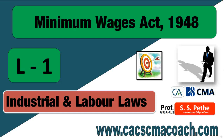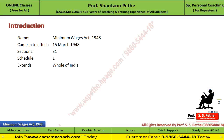We are going to start the topic: Minimum Wages Act 1948. First, we will see the introduction part. The name of this act is Minimum Wages Act 1948, and it came into effect on 15th of March 1948. There are total 31 sections in it, and there is one important schedule. This act extends to the whole of India.